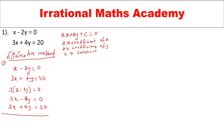If I add the first and second equations directly, 3x plus 3x gives 6x, so I cannot eliminate x. For that reason, I will multiply one of the equations by a minus sign. Here the first equation is positive, so multiplying by minus gives minus signs throughout. Now if you add these two equations, you can eliminate x.